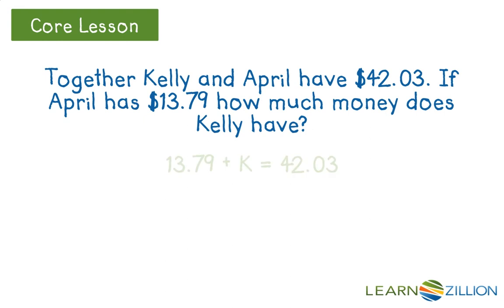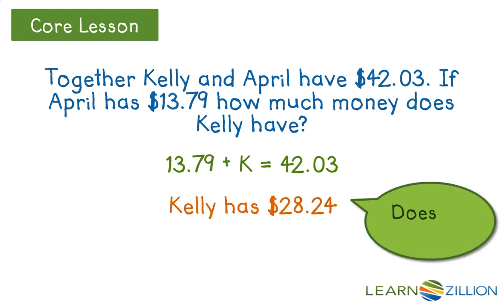Here we have the original situation, our equation we used to represent, and we've said that Kelly has $28.24. But does this make sense? We know that together, April and Kelly's money should equal $42.03. So does $13.79 plus $28.24 equal $42.03? It is, so our answer would be correct.